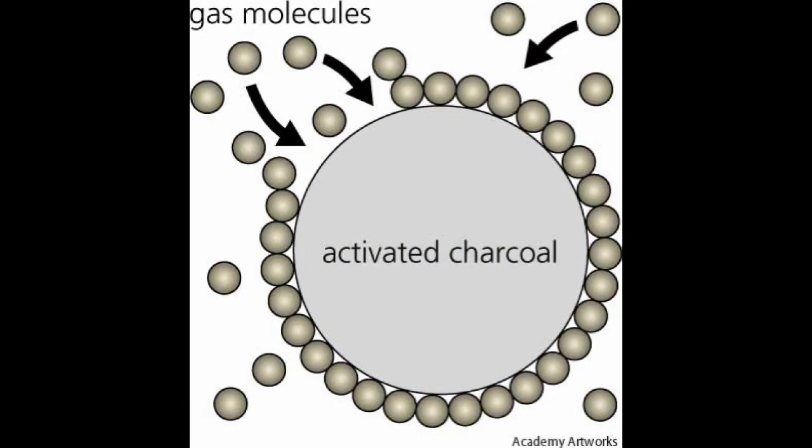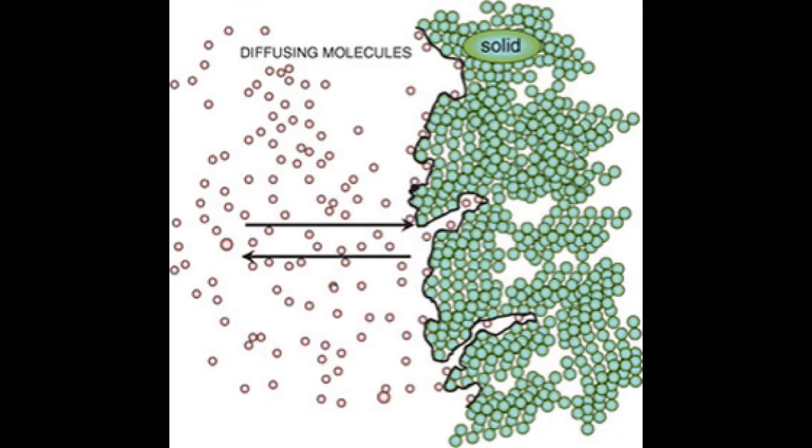It is basically a process whereby gas molecules adhere to stationary surfaces. In this case, it is activated charcoal. Adsorption can lead to multiple layer formations, single layer formations, as well as capillary condensation.